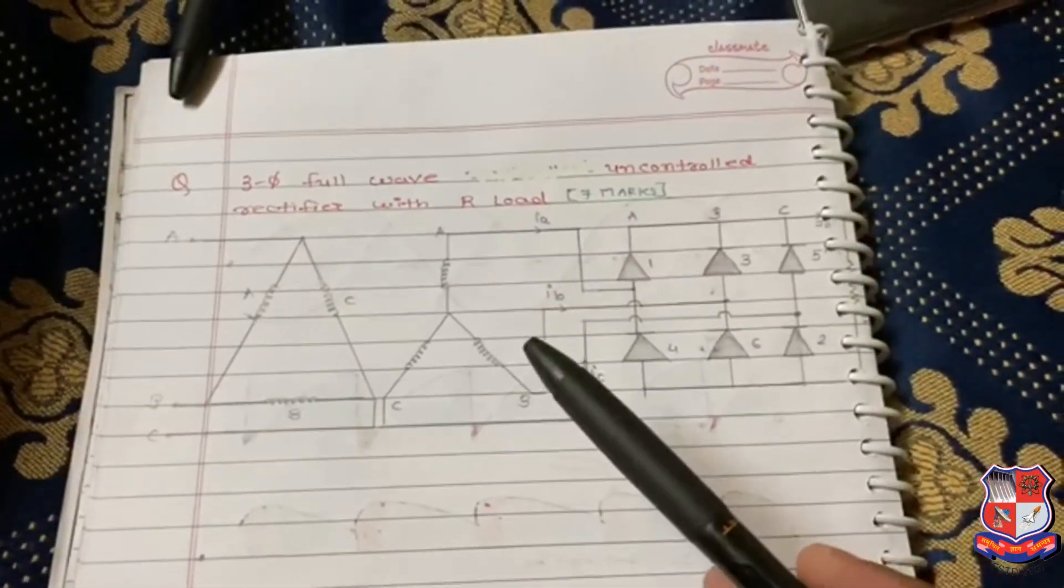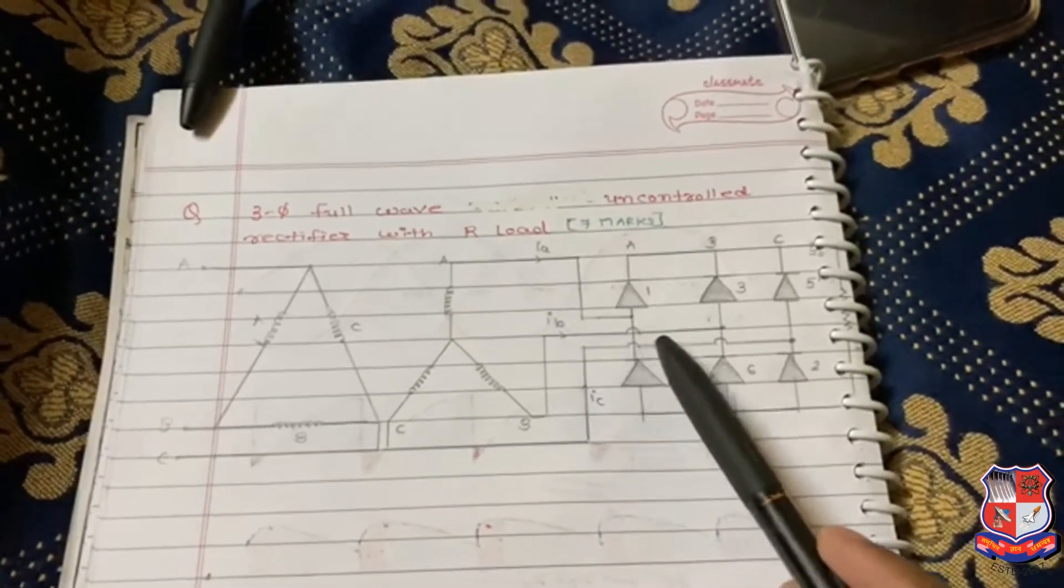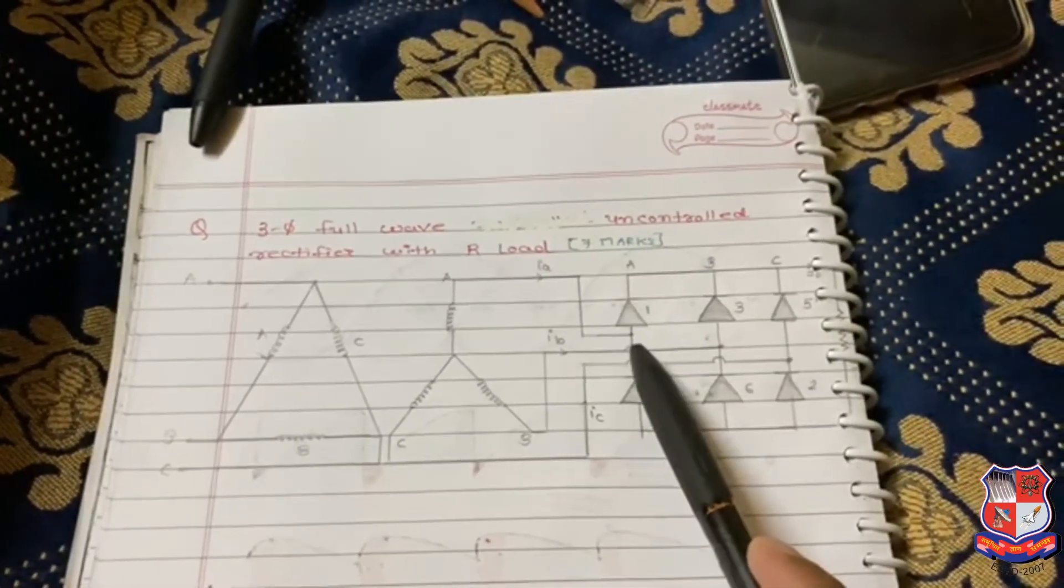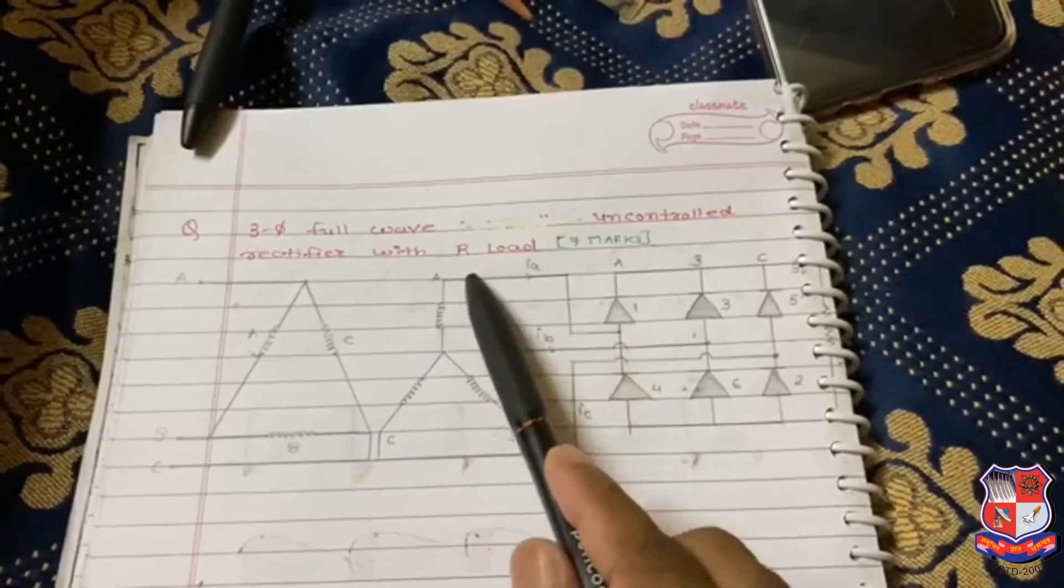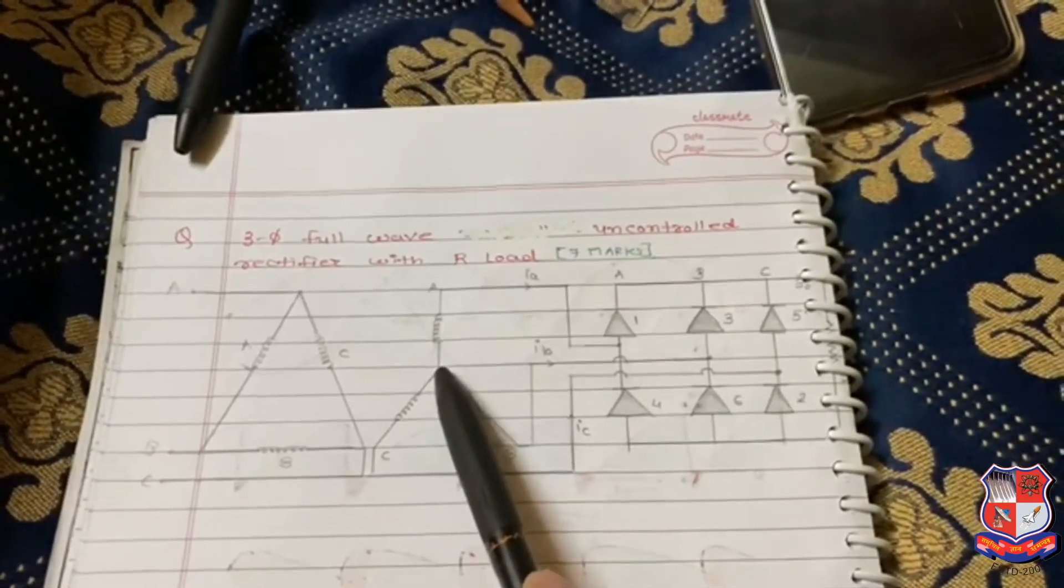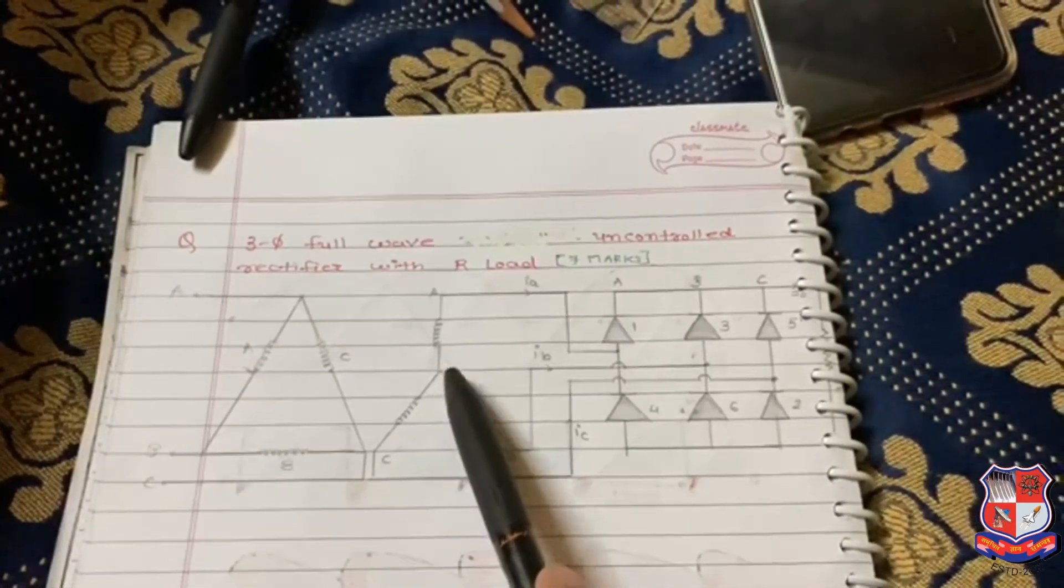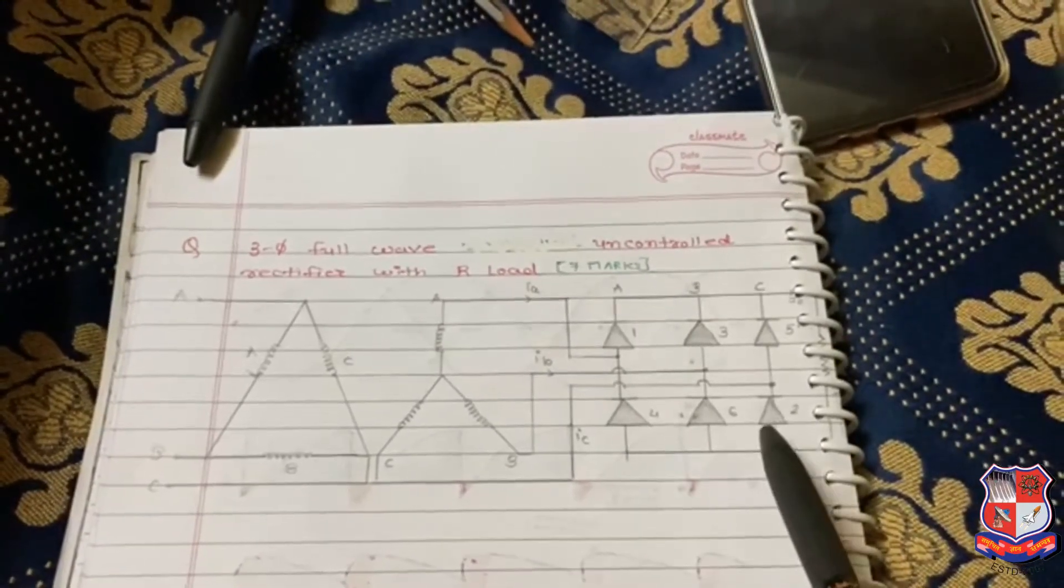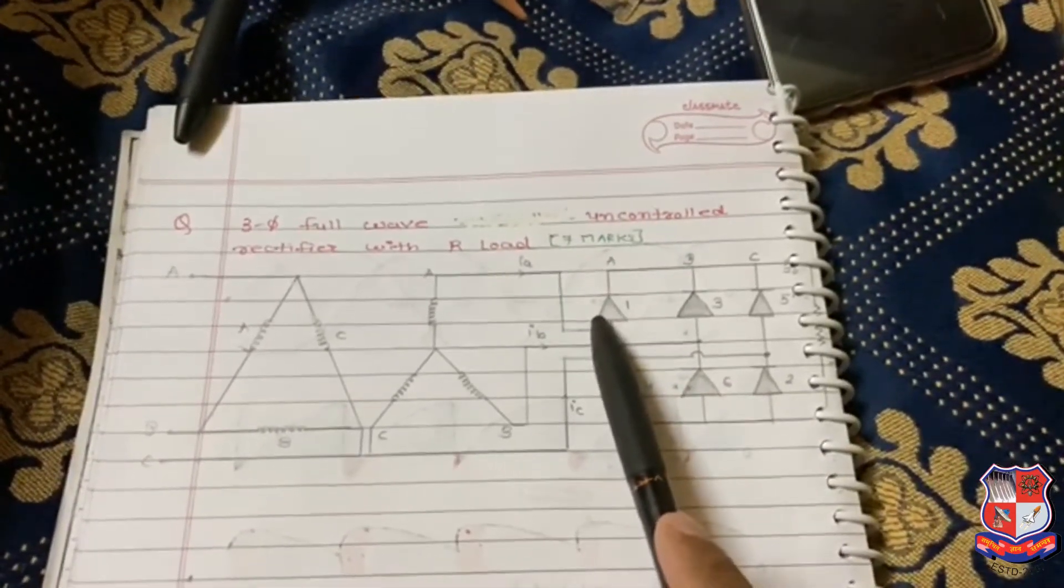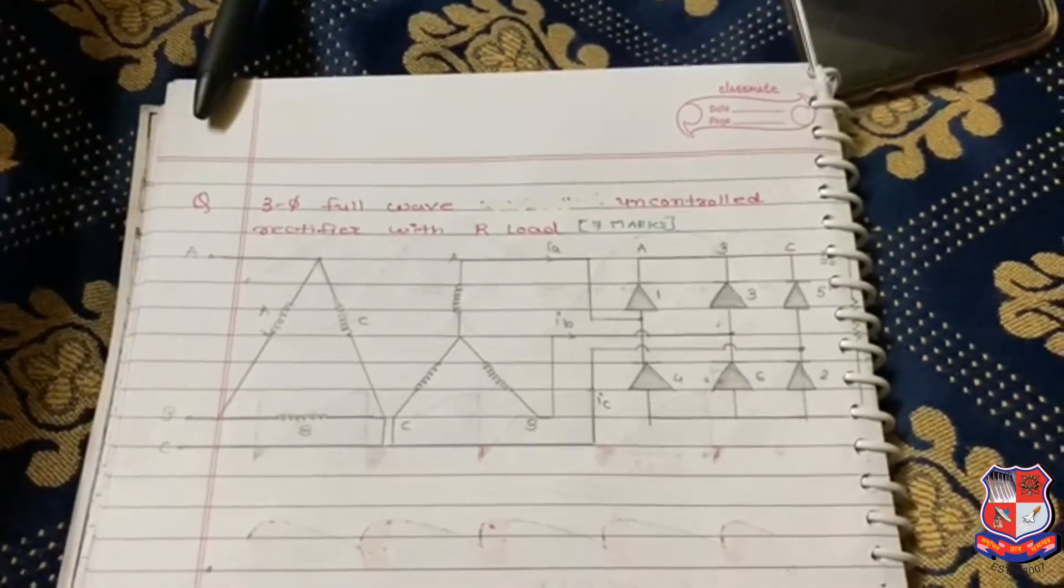So our path will be from switch number five to load then to switch number one. In this case, reverse of the previous case, we can simply say that this voltage is called VCA, and this is opposite of VAC.